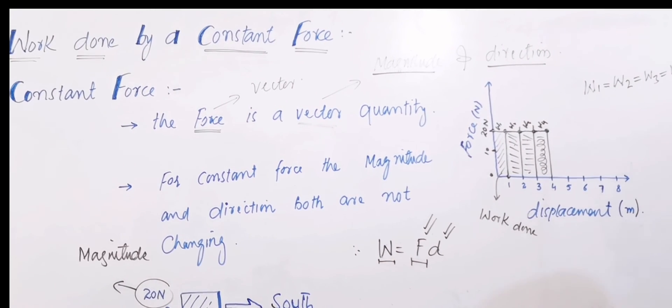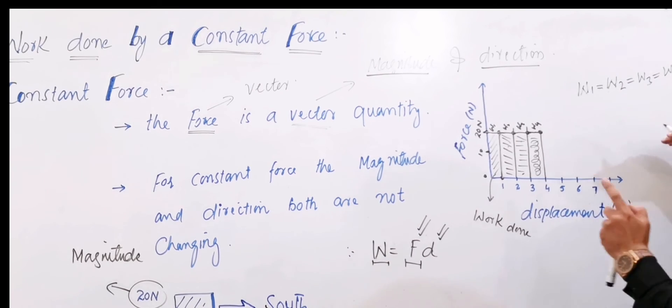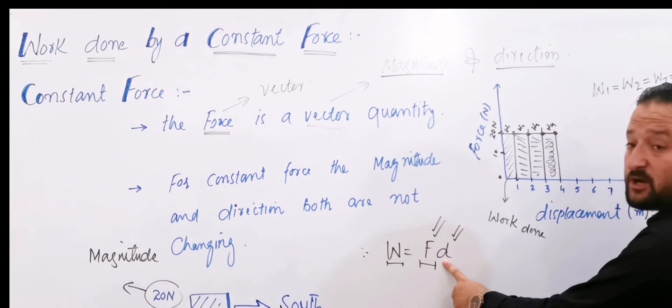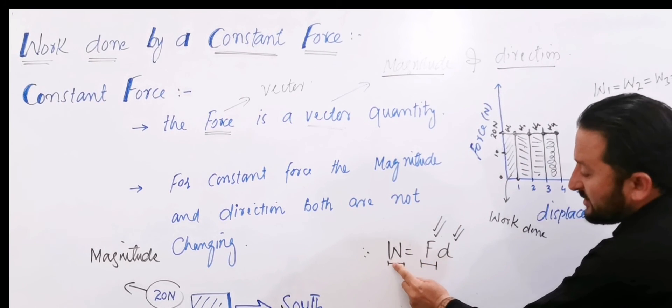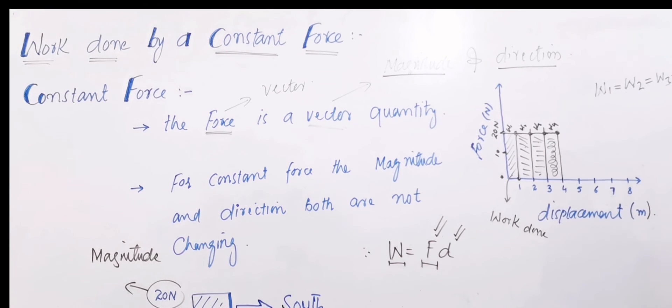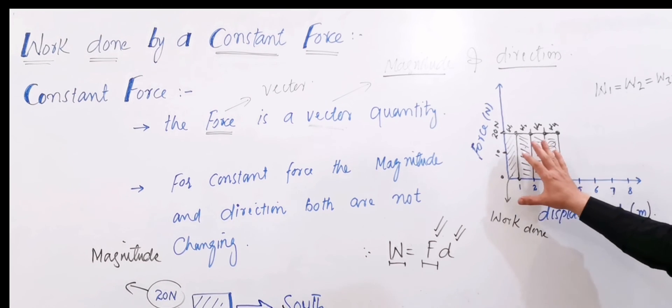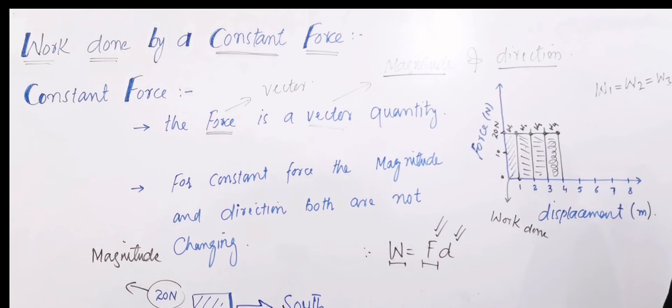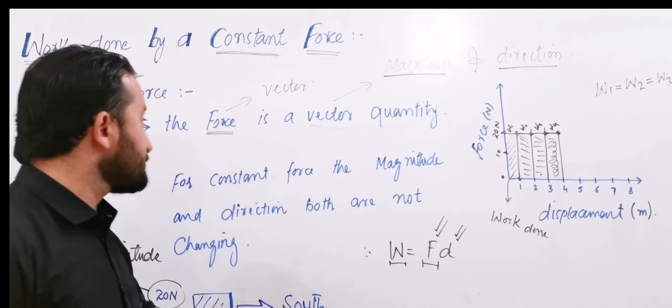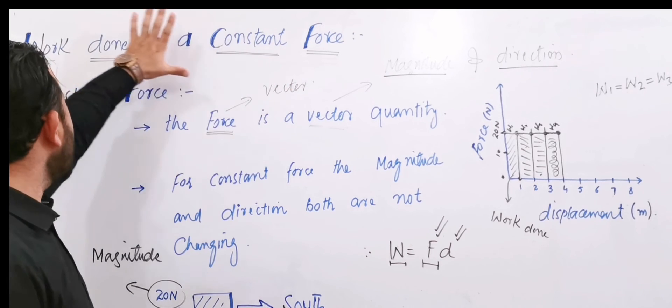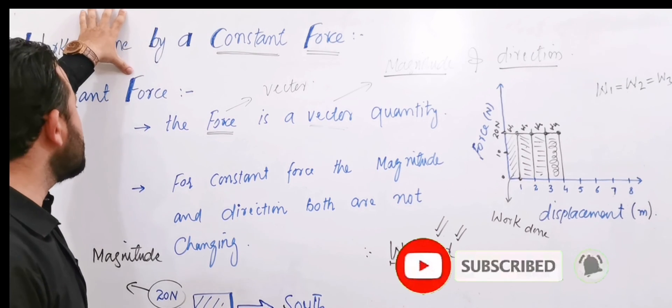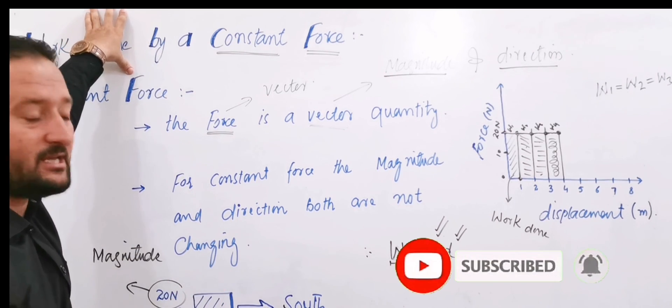Work throughout remains constant. W2 also remains the same. Force is constant, displacement is constant, so work also remains constant. W2 is the same, W3 is the same, W4 is the same. Work done remains the same throughout the region. Work done is the same throughout the region.